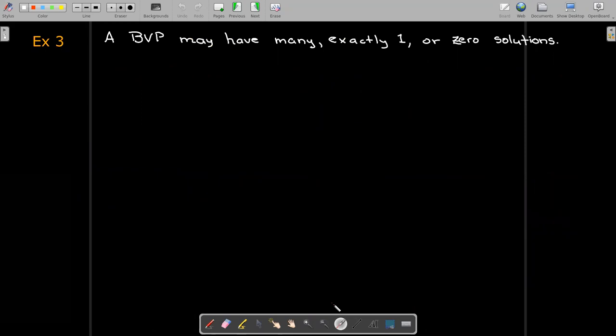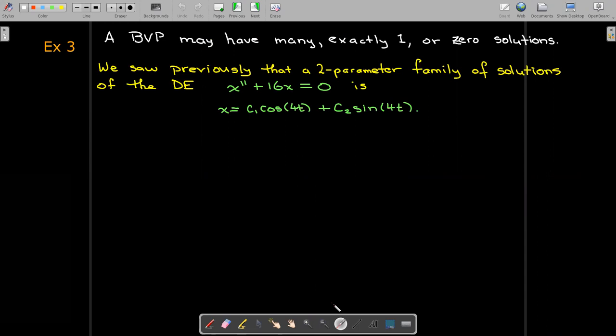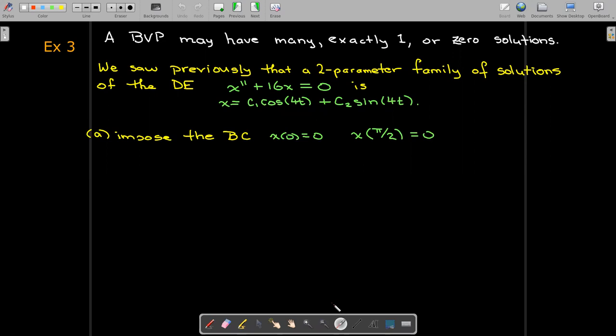All right, let's go through this one step at a time. A boundary value problem may have many, exactly one, or zero solutions. So in a previous video we saw that the solution of the differential equation x'' + 16x = 0 has the form x = c_1*cos(4t) + c_2*sin(4t).